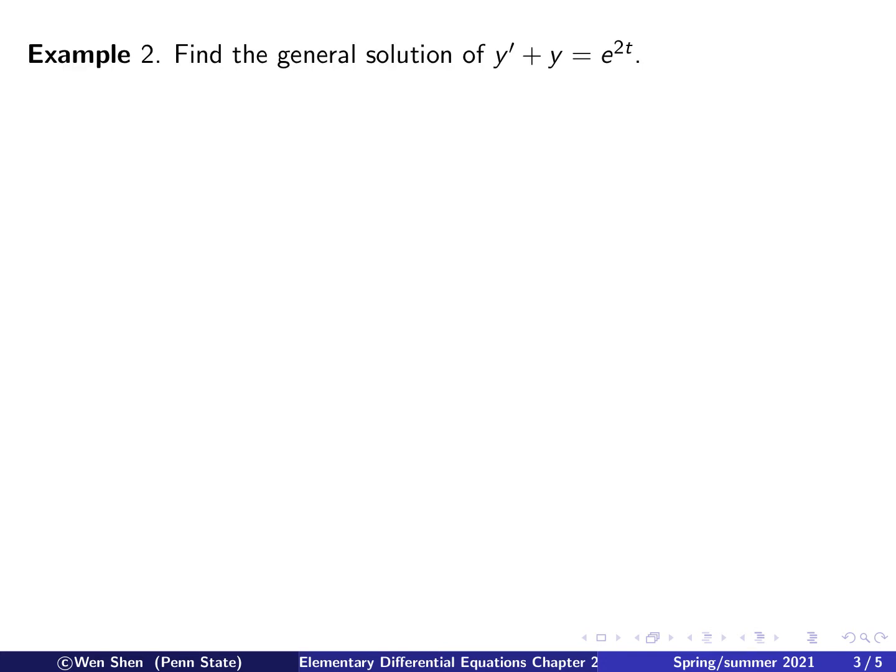In this example, we have the equation y prime plus y equals e to the 2t. If you want to simply use the formula, we can compare this with the standard form and find out that p(t) is 1 constant, and g(t) is the right hand side, that's e to the 2t.